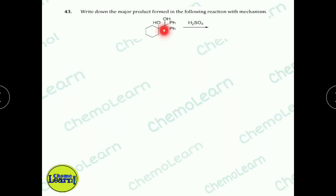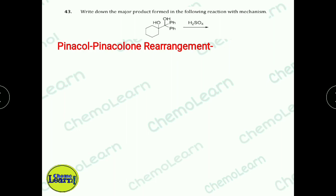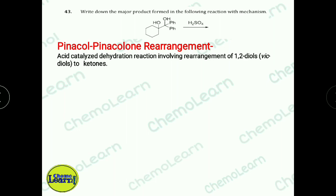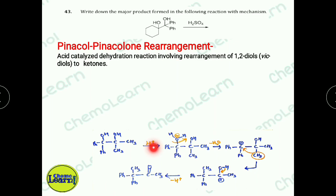Next question involves a diol. Diols are of two types: geminal and vicinal. In geminal diols, two OH groups are on the same carbon, whereas in vicinal diols, two OH groups are on adjacent carbons. This is a vicinal diol called pinacol. Its acid-catalyzed rearrangement is called the pinacolone rearrangement — conversion of a 1,2-diol to a ketone. The mechanism involves protonation of one OH group, removal of water to form a carbocation, then migration of a group from the adjacent carbon, followed by deprotonation of the remaining OH to give a ketone.